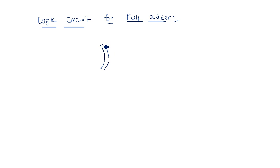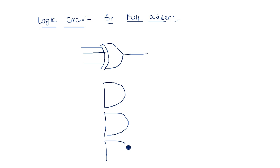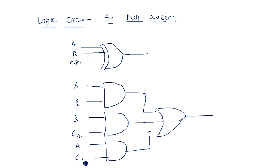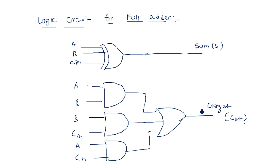The logic circuit for the full adder has a 3-input XOR gate with inputs A, B, Cin producing the sum S. For carry out, three AND gates take inputs AB, BCin, and ACin respectively, and an OR gate combines their outputs to produce Cout. This is the expression and logic circuit for the full adder.